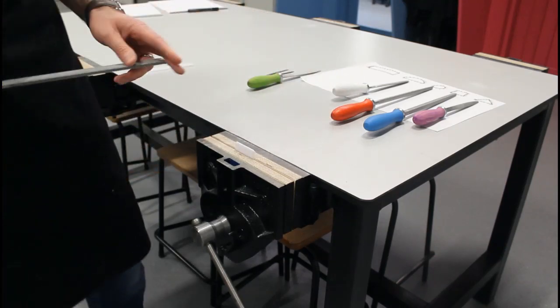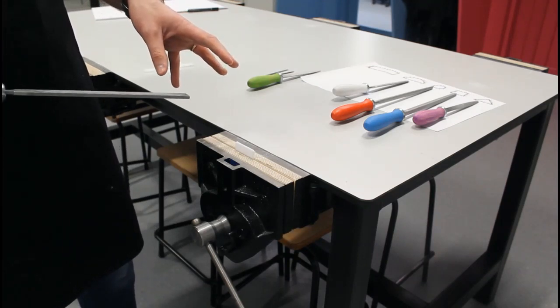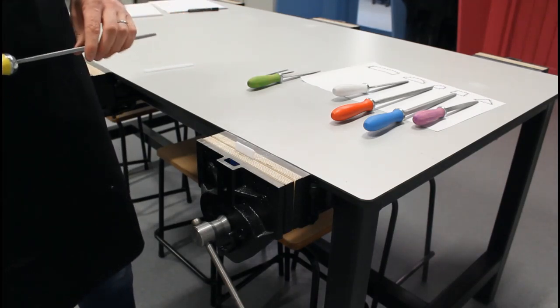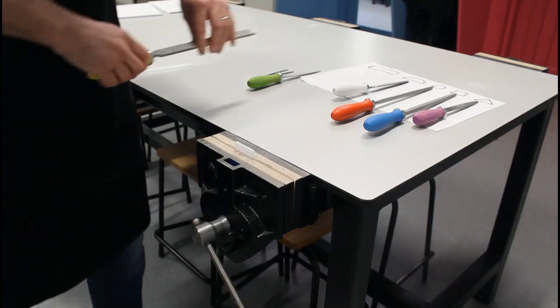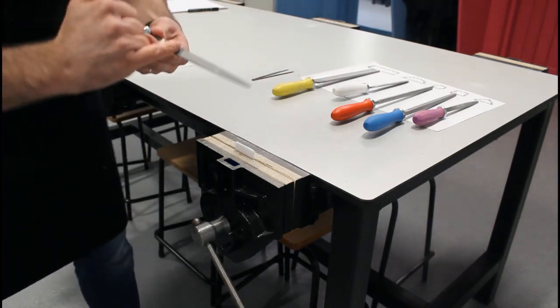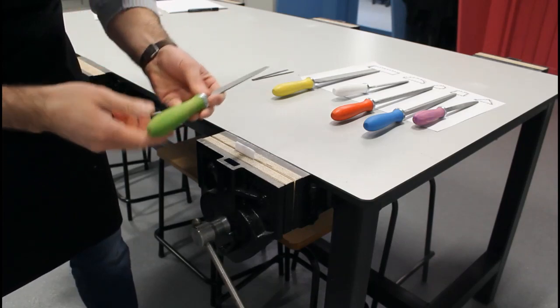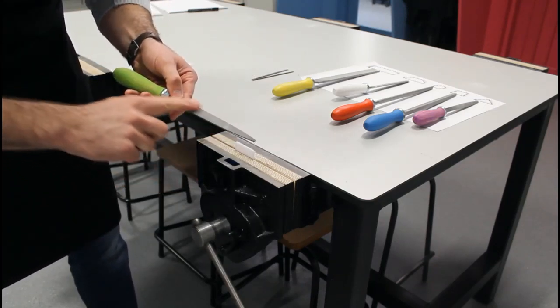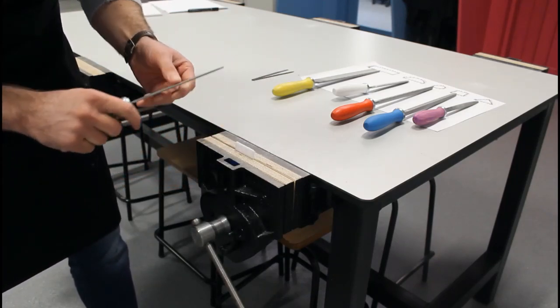The second technique for filing is called draw filing. Now for draw filing, we use a file that has a smooth surface, like this warding file has a smooth surface. This is important and with draw filing, what we're trying to do is when we've cross filed that, we've left a lot of little indents from the cutting surface of that file.